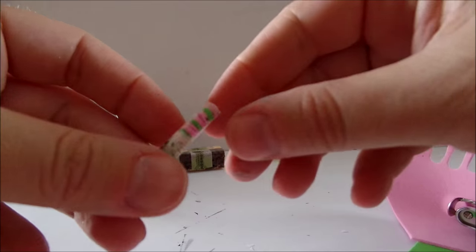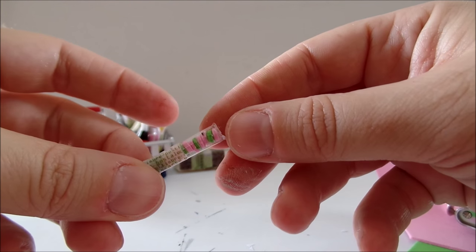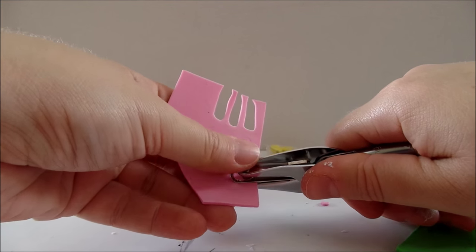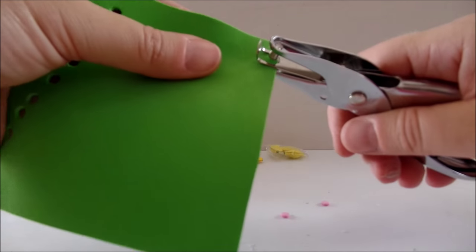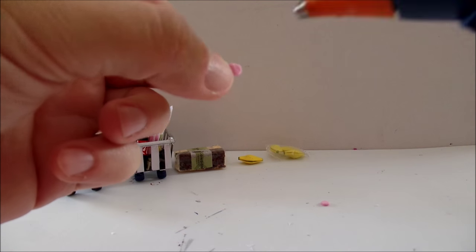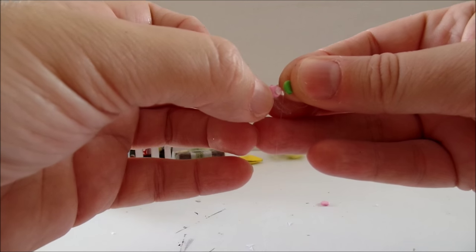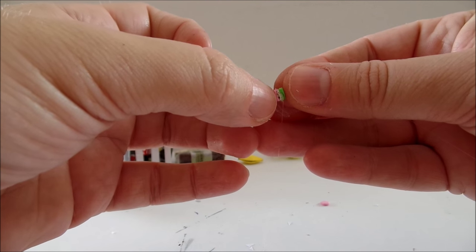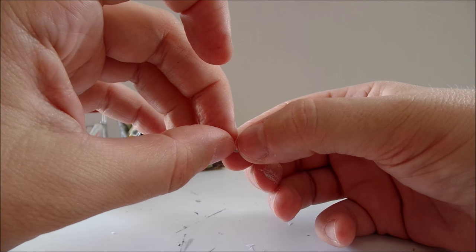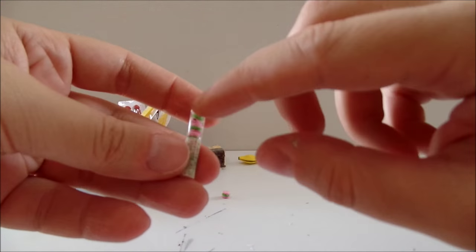To make this tiny macaron, I punched two holes in a pink foam paper and one green. And glue them together using hot glue. And I also package them.